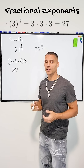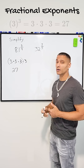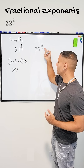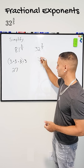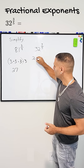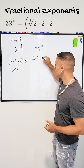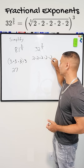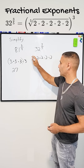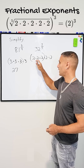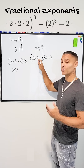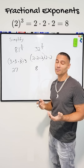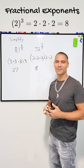All right, let's apply the same logic to this problem right here: 32 to the three-fifths power. First, I'm going to figure out what the fifth root of 32 is, and that would be 2. Two times 2 times 2 is 8, times 2 is 16, times 2 is 32. Then we just take three of those twos: 2 times 2 is 4, and 4 times 2 is 8. So 32 to the three-fifths power is equal to 8, and that's all there is to it.